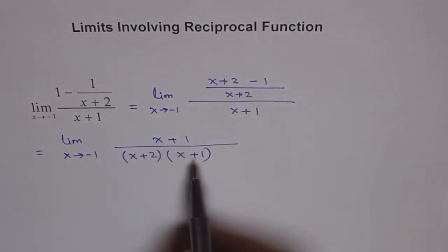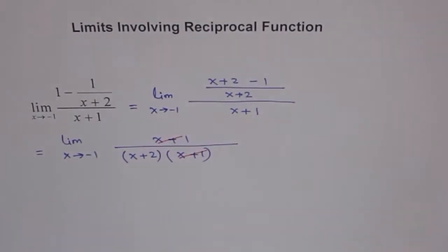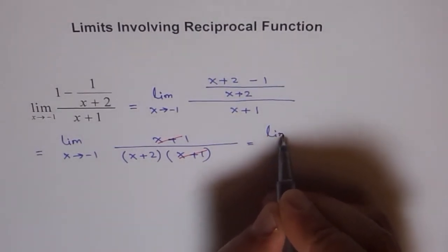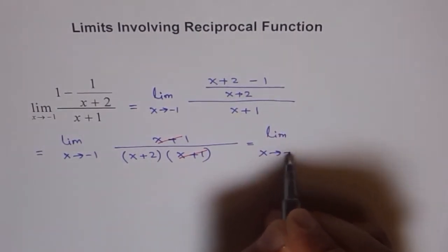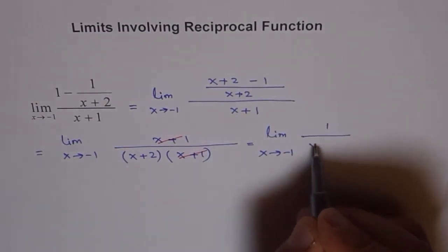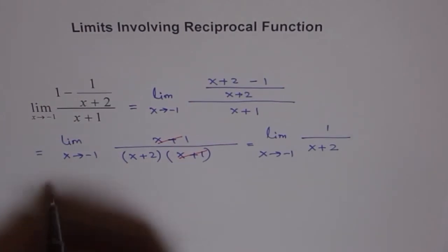Now you see x plus 1 and x plus 1 is common in numerator and denominator so it can be cancelled out. So that's kind of simplification and we can write this as limit x approaches minus 1 and we get 1 over x plus 2.